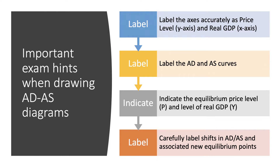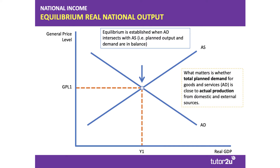Equilibrium GDP happens when planned aggregate demand equals supply. What matters is that planned demand for goods and services — C plus I plus G plus X minus M — is close to the actual level of production from both domestic and external sources. Let's take a look at some common examples of changes in aggregate demand and supply.